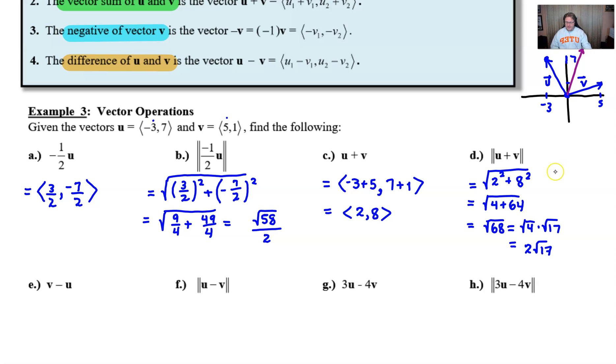v minus u, just be careful here for part e. So you're going to start with the vector v, 5, 1, subtract the component that corresponds from the vector u, which is the negative 3, and then we'll do the same thing with the y component, 1 minus 7. By the time we get everything nicely simplified, we get 8 and negative 6.